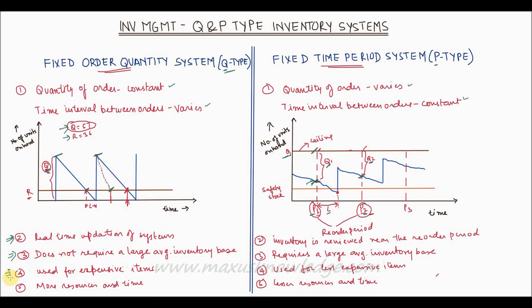The next point is that since the average inventory is lower in Q type systems, you can use it for expensive items. Whereas P type systems is the other way around. So you can use it for the less expensive items.